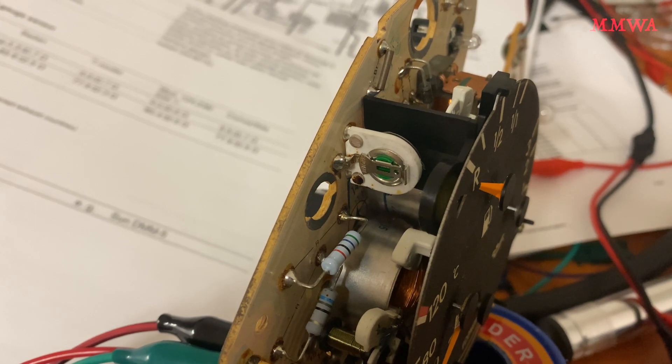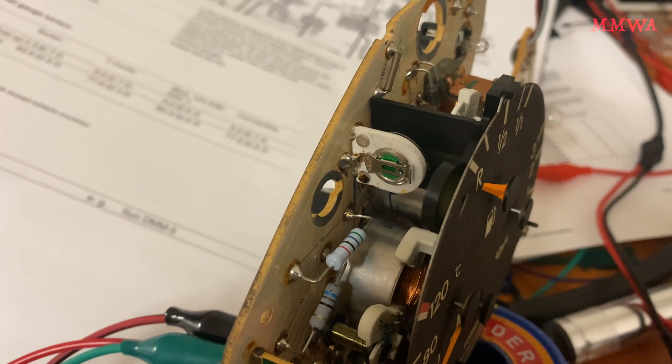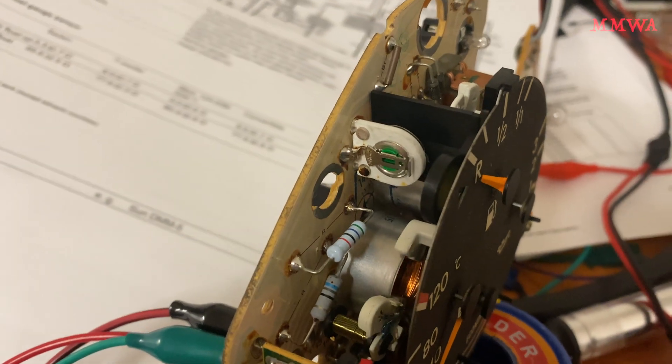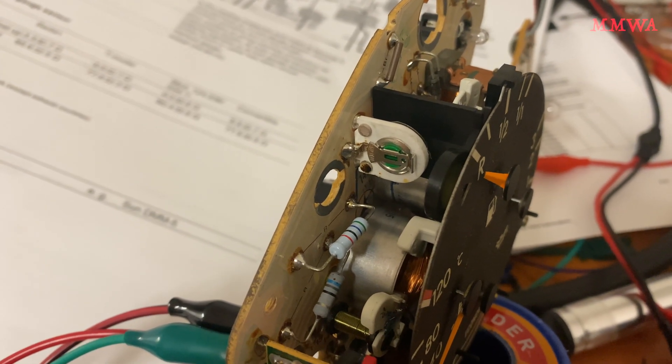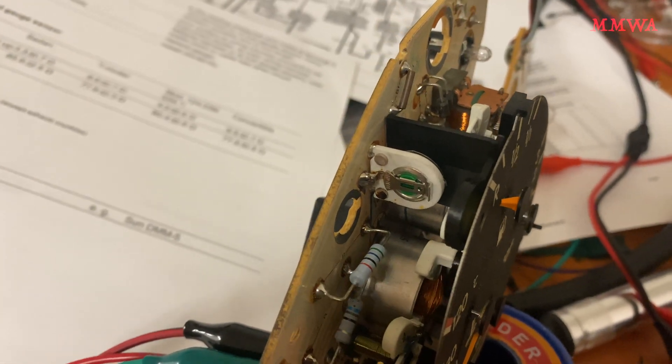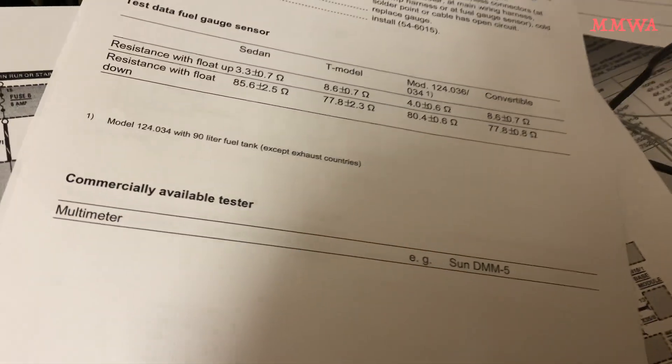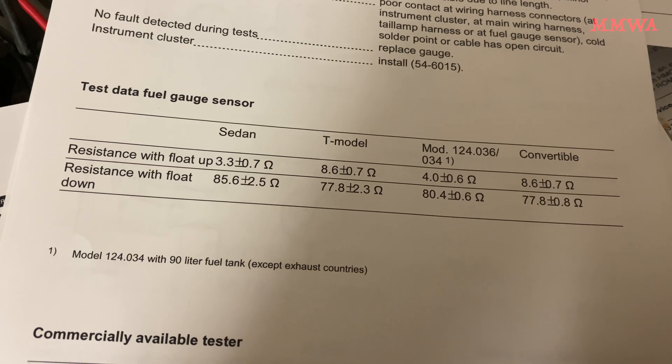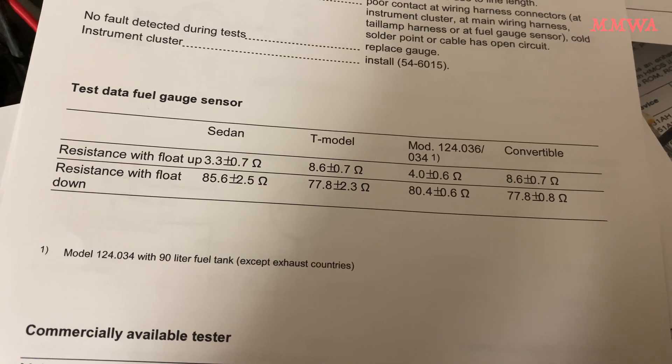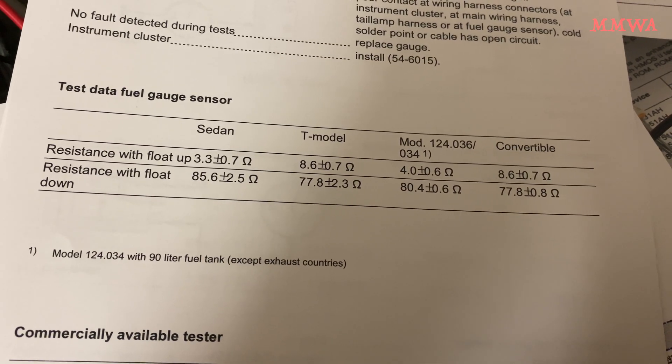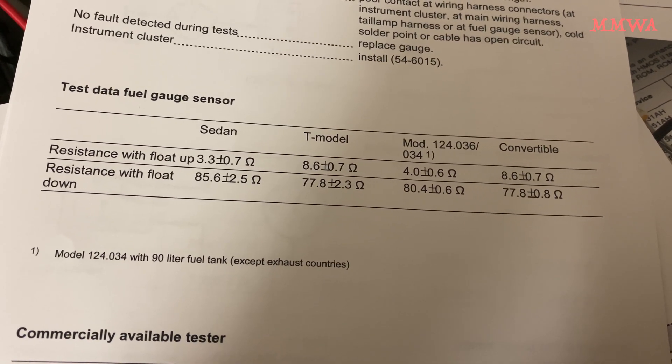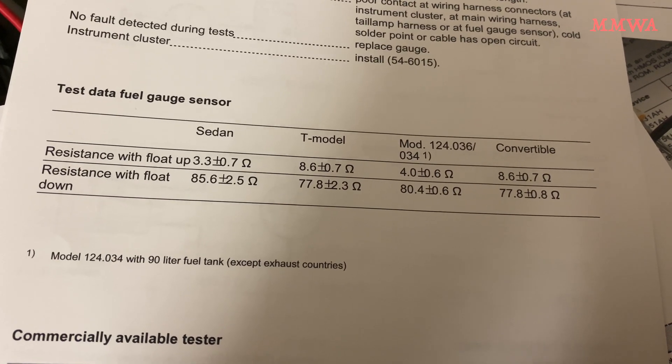It's from the factory, how they calibrated this cluster to go into the particular type of car that it was destined for. Reason being, according to the service manual, there are different resistances for the sedan, T-model, and the 90-liter fuel tank version 500E and 420-400.